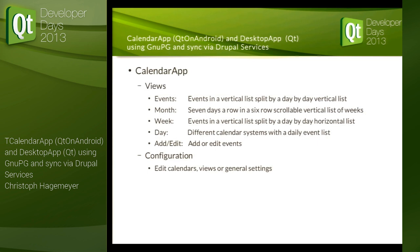You can always see six weeks at one time and scroll up and down. The week view gives you the possibility to flick horizontally, and it's also scalable so you can see one day or 14 days or something between them. There's also a day view where you can see your events for a specific day.